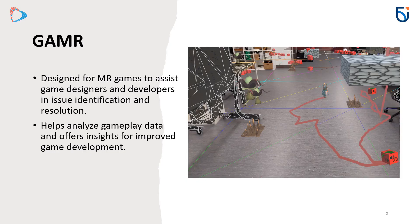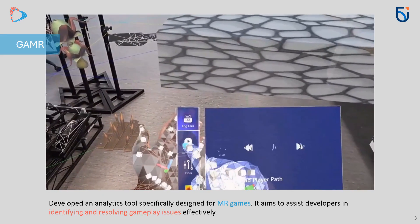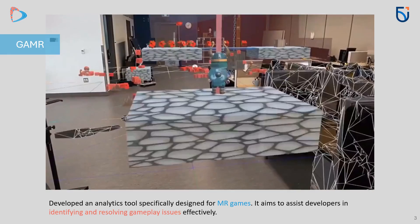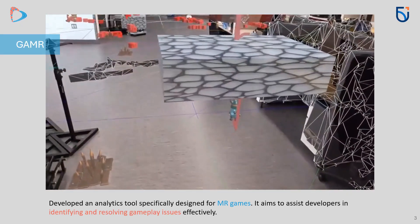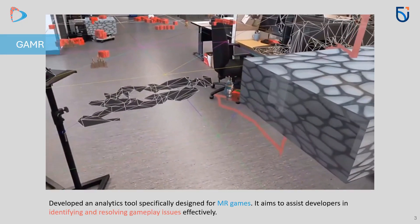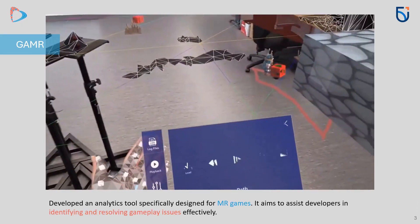In this work, we develop an analytic tool specifically designed for mixed reality games to assist developers in identifying and resolving gameplay issues effectively through its features including reconstructed gameplay sessions, heatmaps, a comprehensive annotation system, and advanced tracking for hands, camera input, and audio, which provides in-depth insights for game analysis. Through its comprehensive feature set, GAMR allows the developers to pinpoint issues such as performance bottlenecks, level design flaws, and inconsistencies in player experience. By visualizing player movement and interaction patterns, the tool provides valuable insights that guide the refinement of mixed reality games.